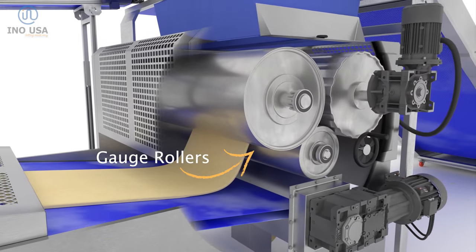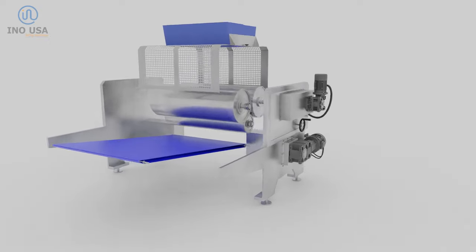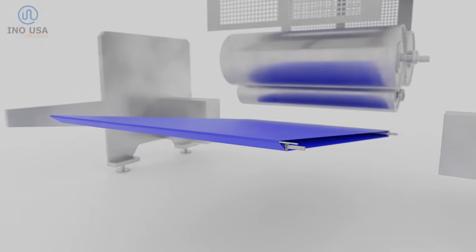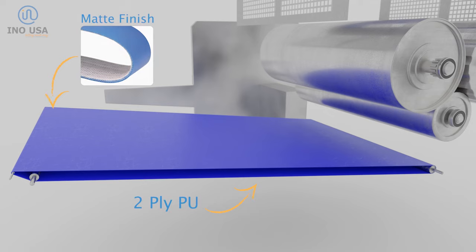The belt used on the sheeter is usually a white or blue 2-ply polyurethane belt, preferably matte to improve release, and able to be used on small pulleys.